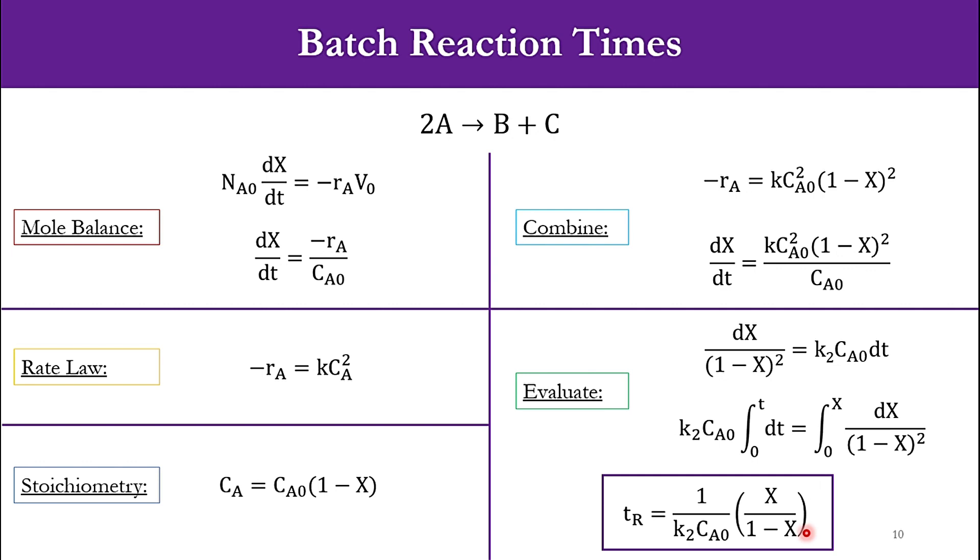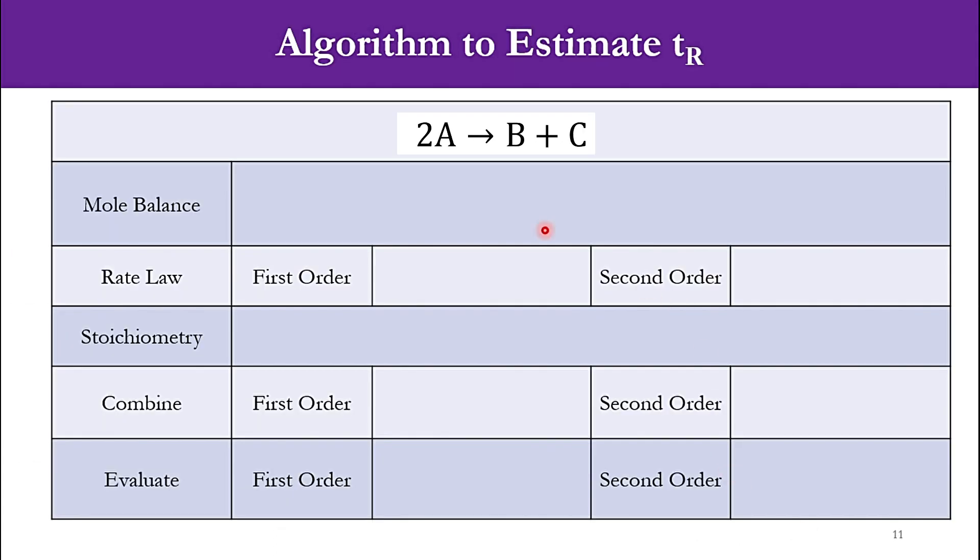Using the same guidelines, we can proceed for the first order system. Let's assume that 2A in an irreversible manner goes to B plus C. Accordingly, mole balance will be dX/dt equals -RA over CA0. That will be same.